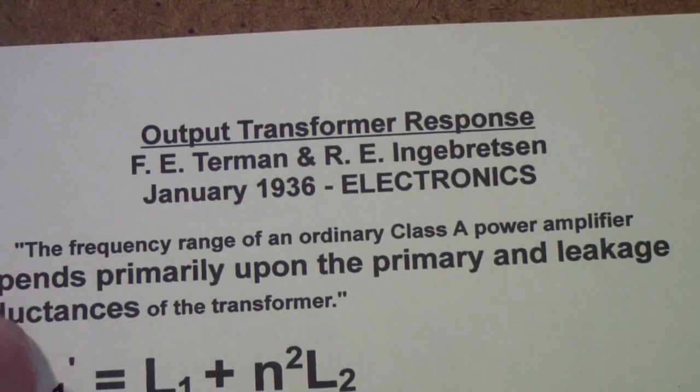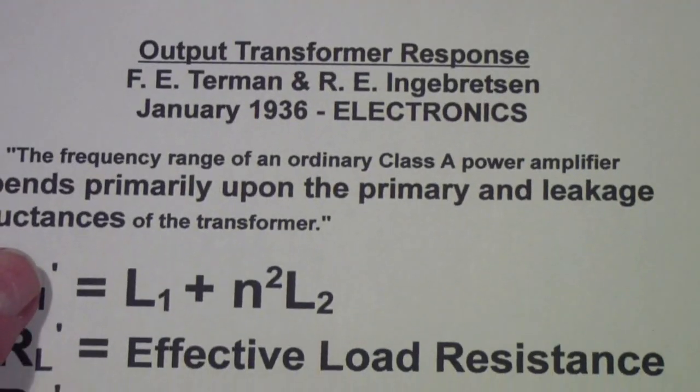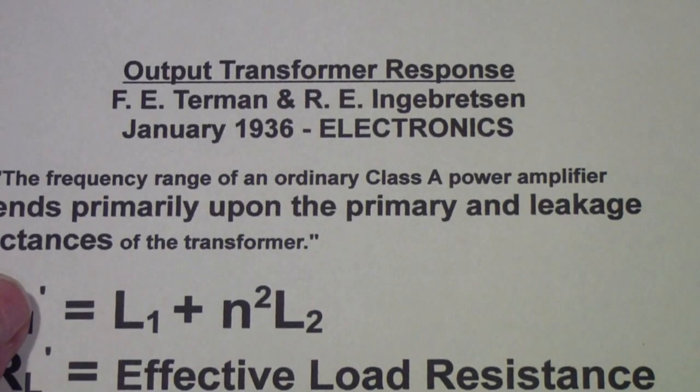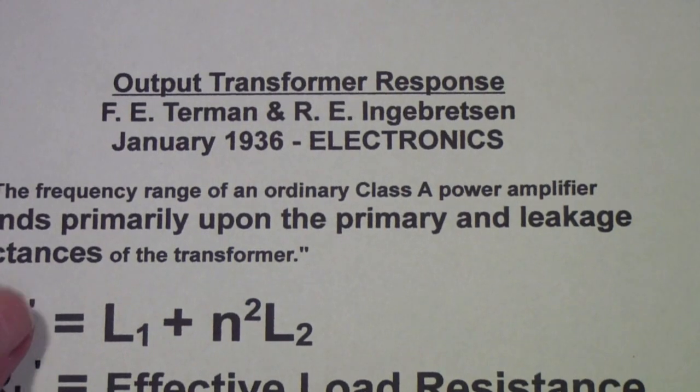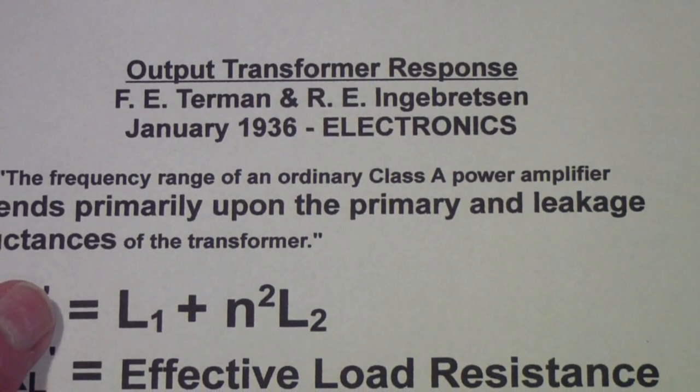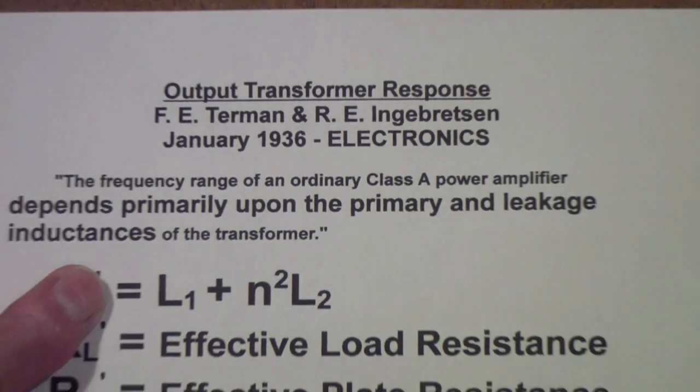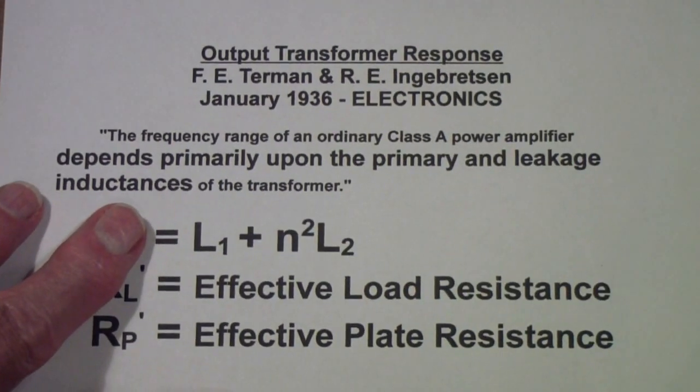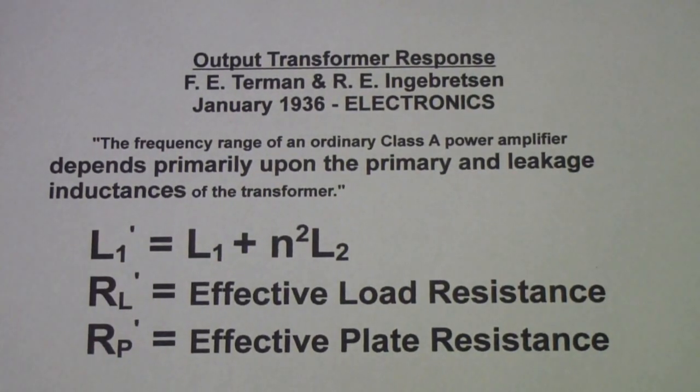Okay, as I pointed out, it's a paper called Output Transformer Response by Terman and Engelbretsen. I think I'm pronouncing that right. But if I'm not, I apologize. January 36, Electronics. In the very first sentence, the authors write, the frequency range of an ordinary Class A power amplifier, and I've emphasized this part, depends primarily upon the primary and leakage inductance of the transformer.